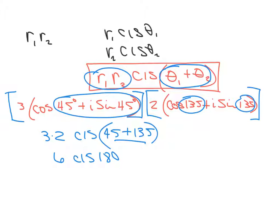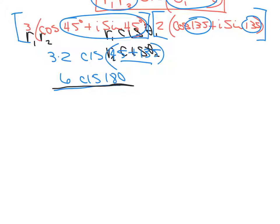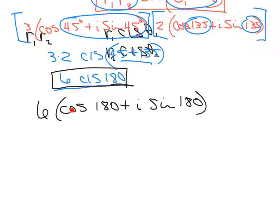We can actually add those and get 6 cis 180. Now what I'm going to do is take this and split it up. I'm going to write it not in the short version, but in the long version: 6 cos 180 plus i sin 180. The only reason I'm doing this is because we need to find what the cos 180 is and what the sin 180 is. When it's written this way, it's harder to tell what you're trying to do, so I spread it out.